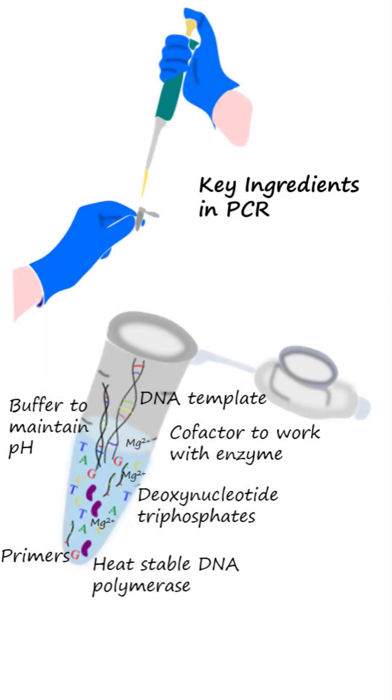The key components in PCR are the DNA template with a sequence to be amplified, thermostable DNA polymerase, deoxynucleotide triphosphates, primers, cofactors, and a buffer.